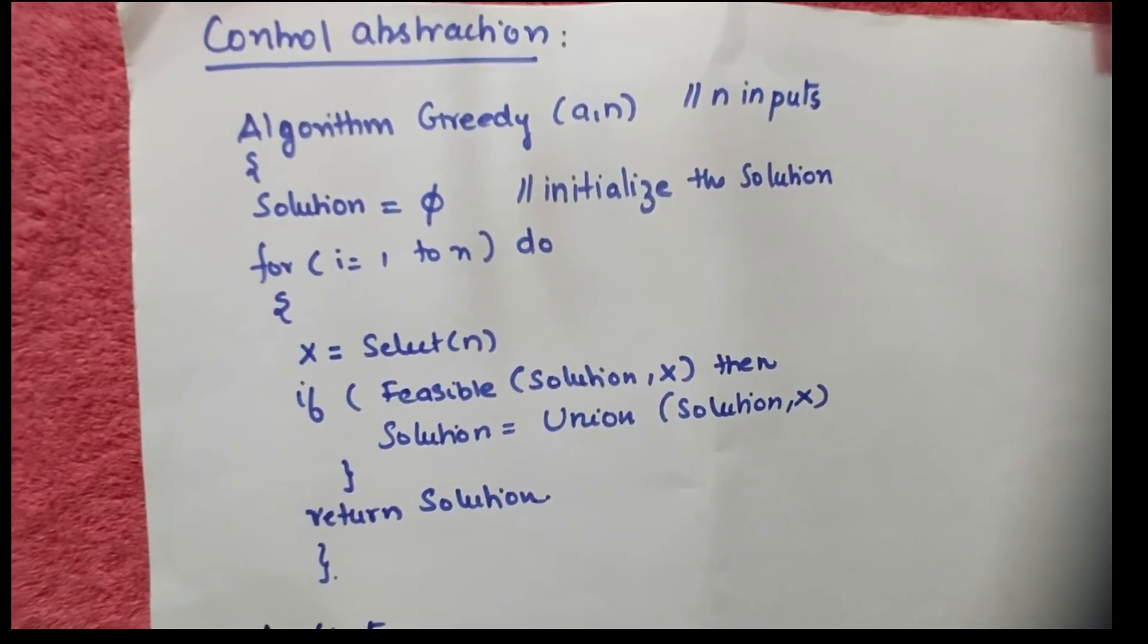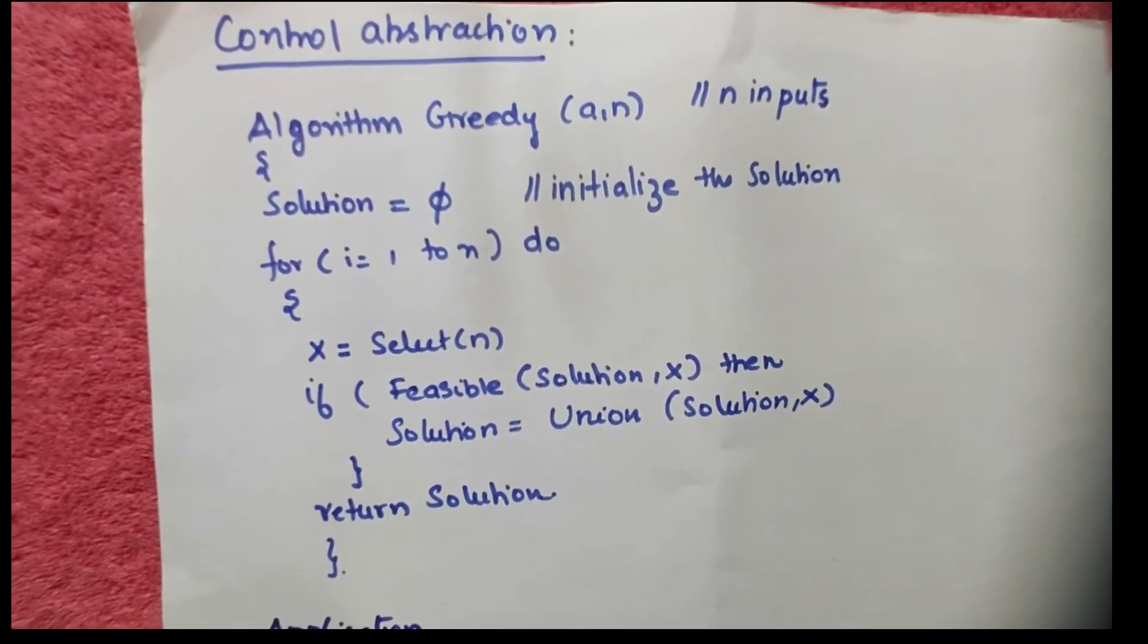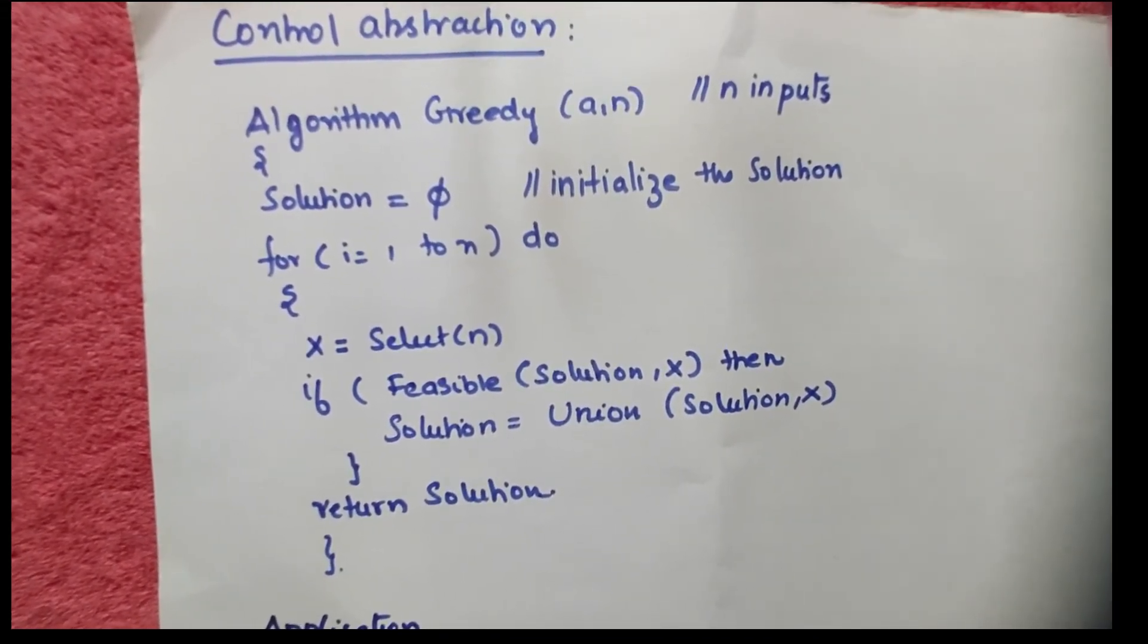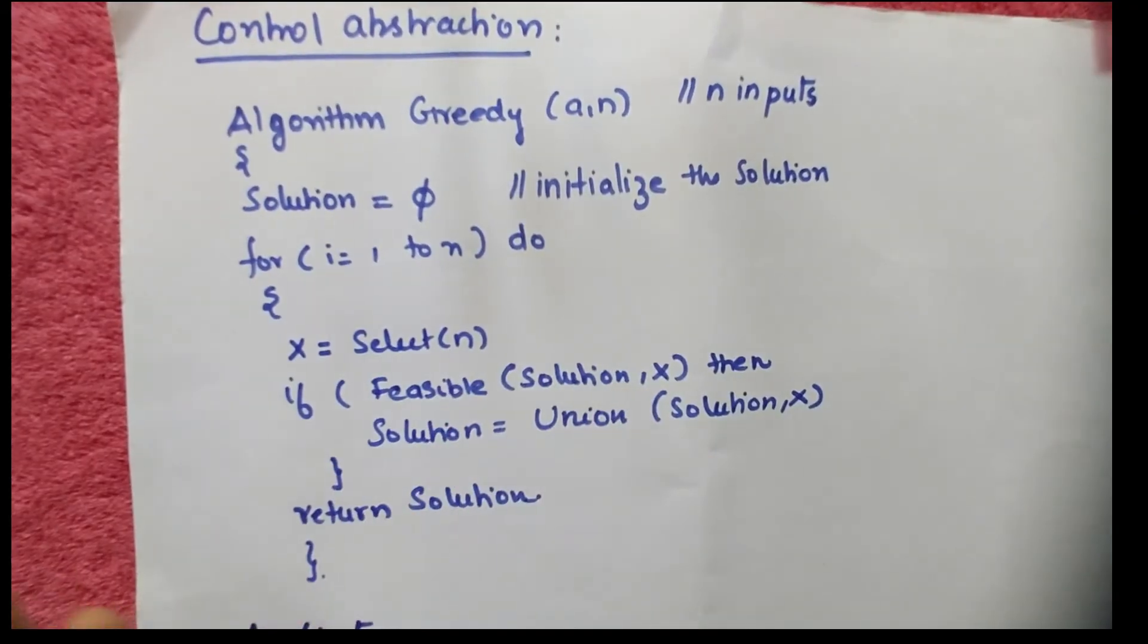You can travel by car, auto, train, or flight. The solution was kept as phi, that is initialization.